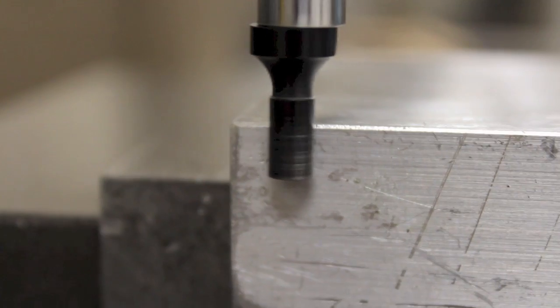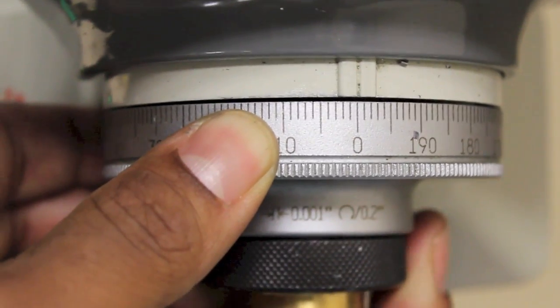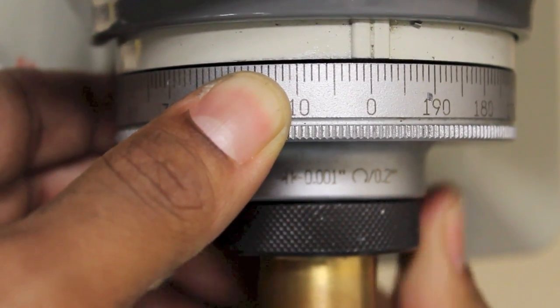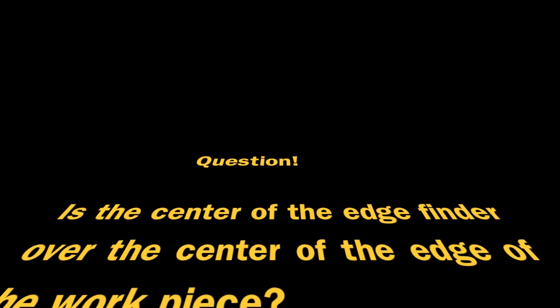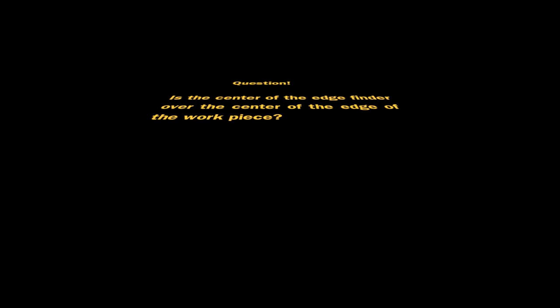This is where the operator should adjust his machine coordinates and place the x-axis at zero. But is the center of the edge finder over the center of the edge of the workpiece? The answer is no.